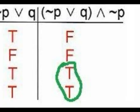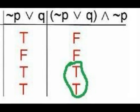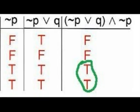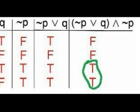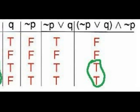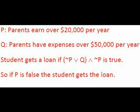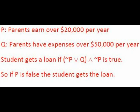So what does all this mean? By looking at the truth table, we can determine the truth values of P and Q when the compound statement is true or false. We see that the compound statement is true in the last two rows, and P is false in both cases. Therefore, the compound statement will be true when P is false. For example, suppose P represents parents earning over $20,000 per year and Q represents parents having expenses over $50,000 per year, and a student gets a loan if the compound statement is true. If P is false — that is, if the student's parents don't earn over $20,000 per year — the student will get the loan.